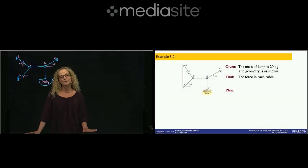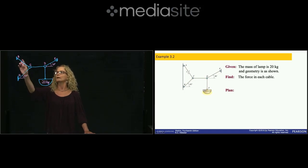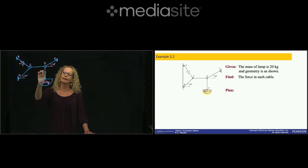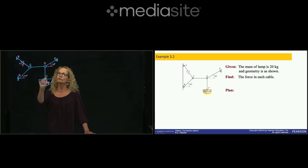We are working in Chapter 3, and this is example number 2. Here we have a range of cables holding a lamp. We have two joints: one joint that has three cables, and another joint that has two cables, plus the cable that holds the lamp. The mass of that lamp is 20 kilograms, and we are asked to find the tension in all the cables.